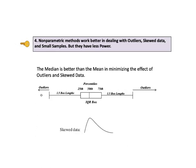KTU number 4 says nonparametric methods work better in dealing with outliers, skewed data, and small samples, but nonparametric methods have less power. Since nonparametric methods use the median instead of the mean, they are better than parametric methods in minimizing the influence of outliers and skewed data. For that reason, in certain situations, the median is a more useful measure of central tendency than the mean.